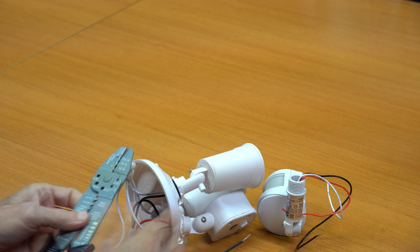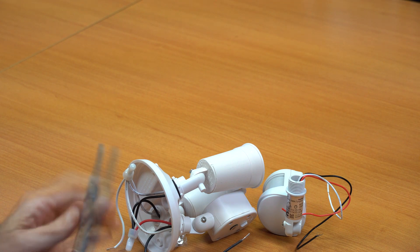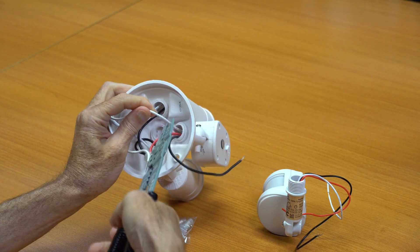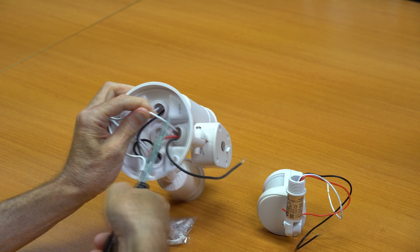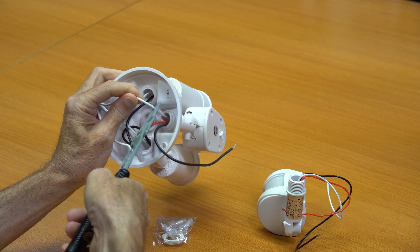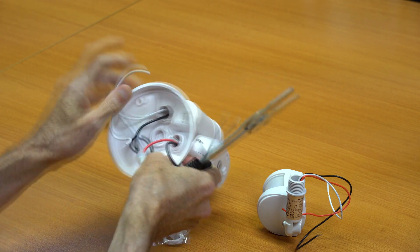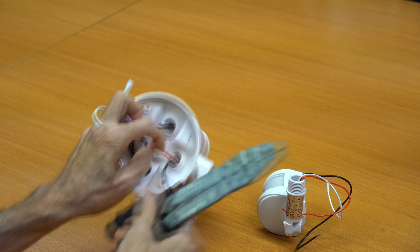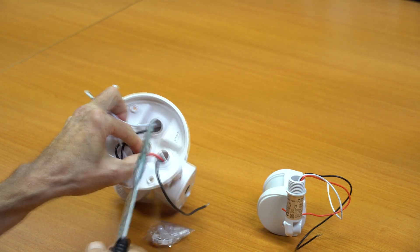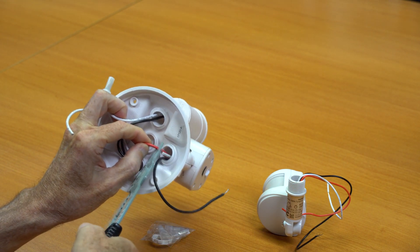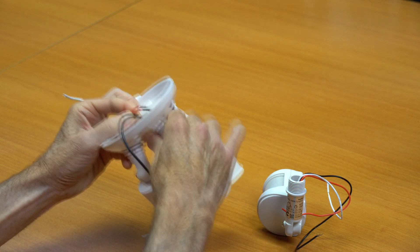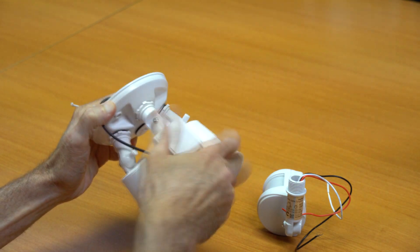The first step is going to be to snip the white neutral wire and the red load wire. When you do this, make sure that you leave an inch or two of wire material inside the fixture. You need to have enough material in there so that you can strip those wires and attach them to the new sensor. After the wires are cut, I'm going to remove the existing sensor just by unscrewing it.